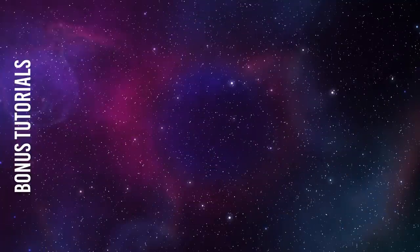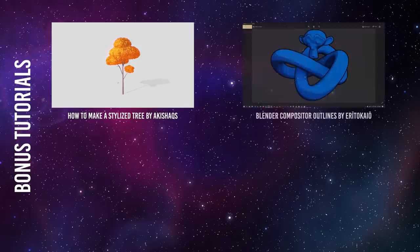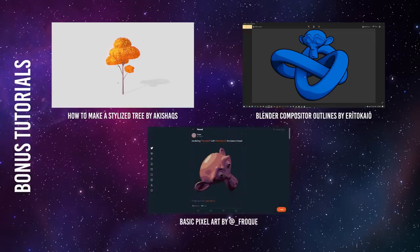We have a few more bonus tutorials worth your time. The first is How to Make a Stylized Tree by Akishax, involving the particle system and vertex normal editing — the result is pretty stunning. The second is Blender Compositor Outlines by Irito Kayo, a good starting point for using depth to find an outline. And the last is the Basic Pixel Art Twitter thread by AtFroke — a fast read and easy to understand.